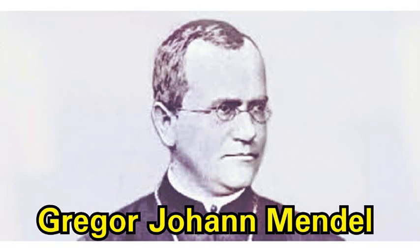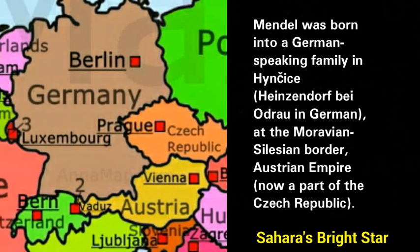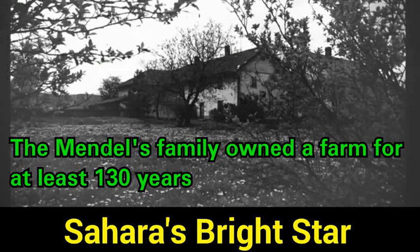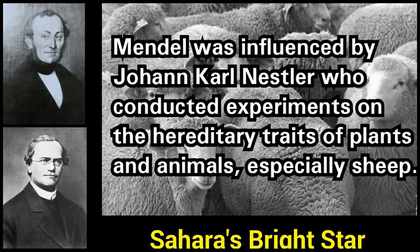Gregor Johann Mendel was born into a German-speaking family in Hinkais Heinzendorf-Beodor at the Moravian-Silesian border of the Austrian Empire, now part of the Czech Republic. The Mendel family owned a farm for at least 130 years. Mendel was influenced by Johann Karl Nestler, who conducted experiments on the hereditary traits of plants and animals, especially sheep.